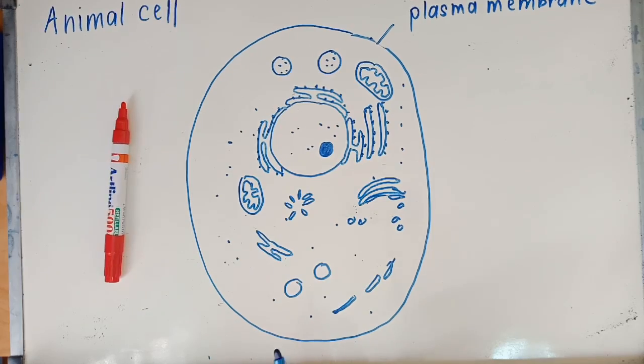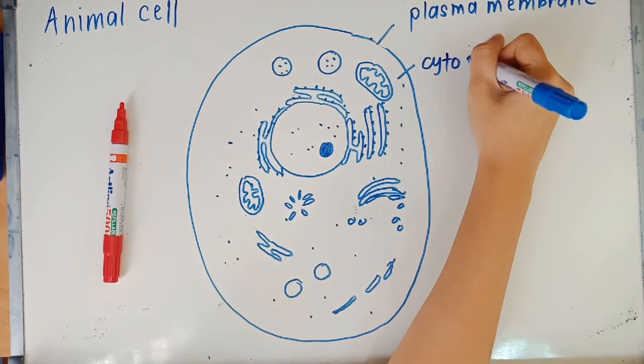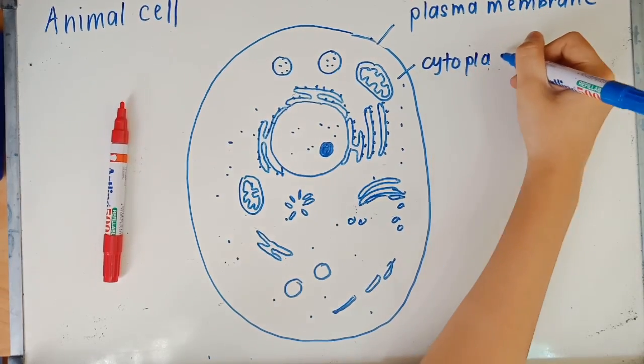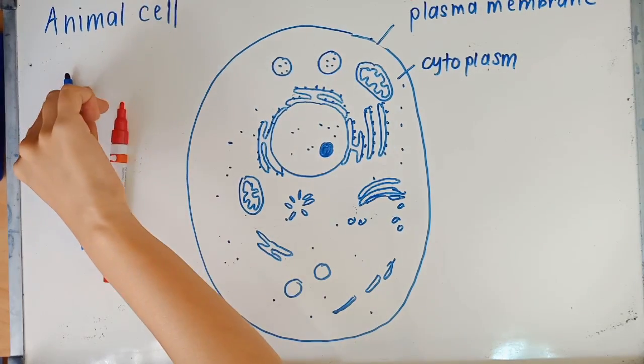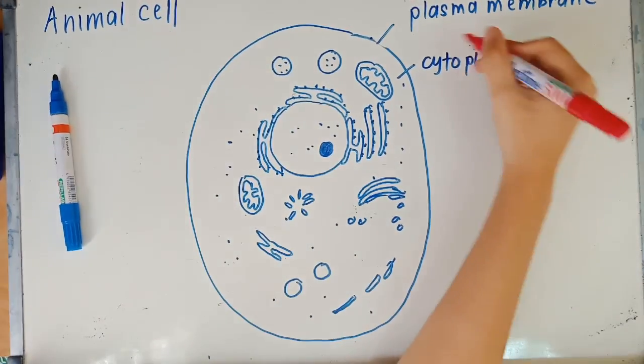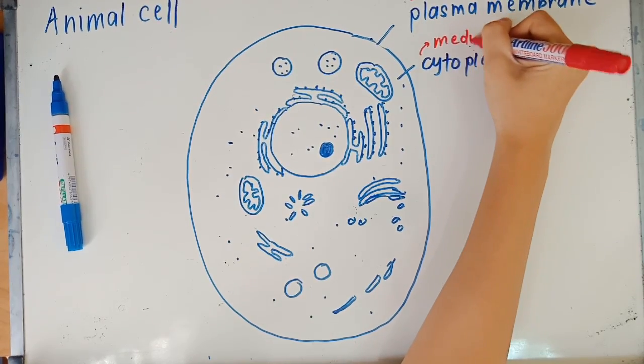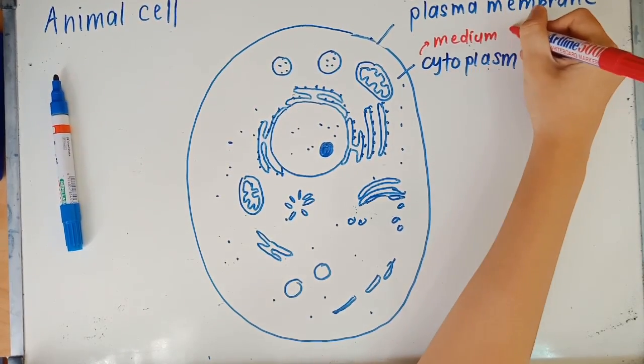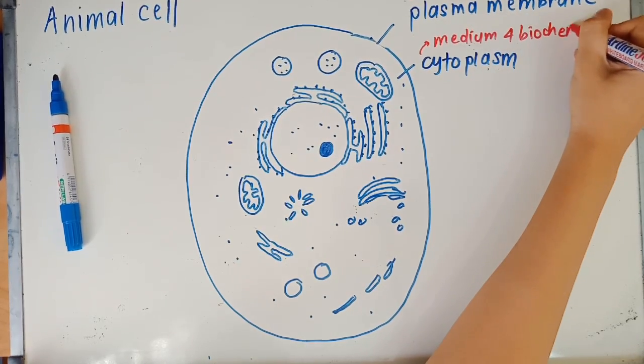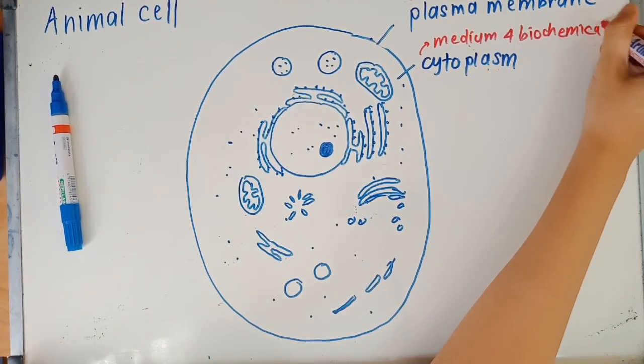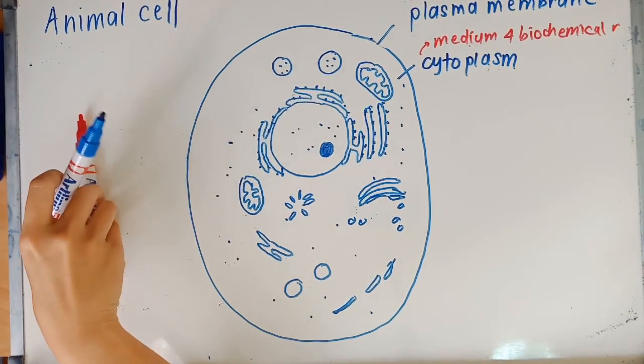Your answer would be proteins and phospholipids. The function of plasma membrane is simply to regulate the movement of substances in and out of the cell, and it is also semi-permeable. The second thing that we are looking at is the cytoplasm, which is just a jelly-like medium where the organelles are suspended. The function of cytoplasm is simply the medium where biochemical reactions occur. Examples of biochemical reactions are respiration and photosynthesis.